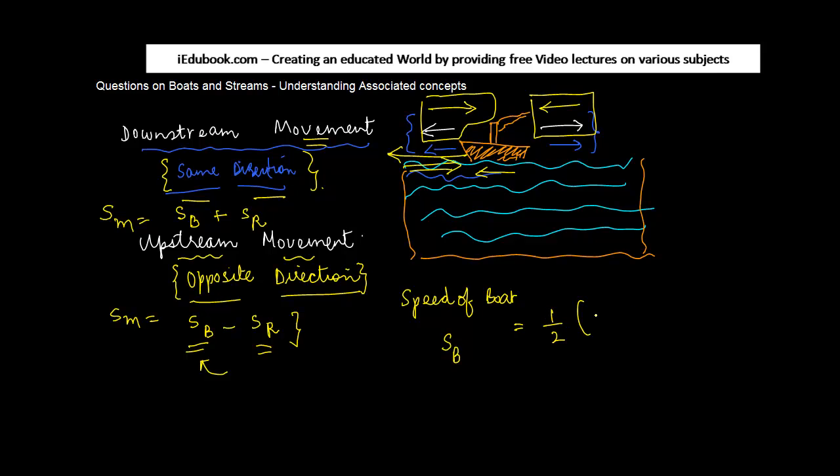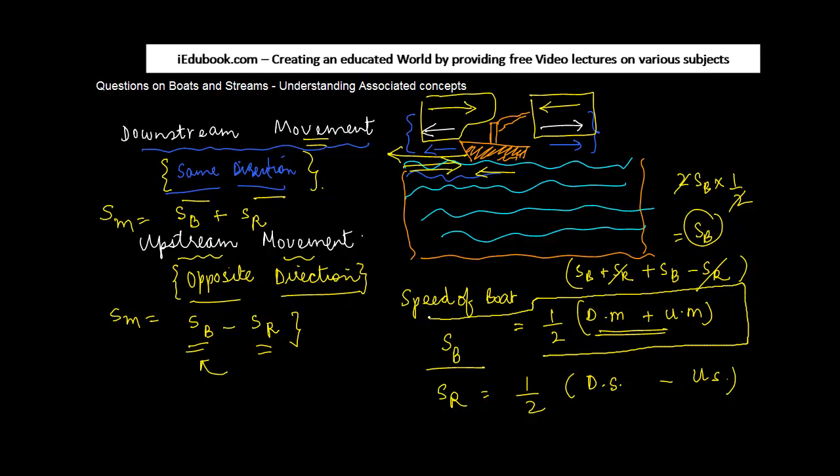Also, you can find out the speed of boat, which I am referring to as SB, as half the sum of downstream movement plus upstream movement. And the speed of river as half the downstream speed minus upstream speed. I've written this as movement, or you can take it as speed also. If you take a sum of these two, the downstream movement is SB plus SR plus SB minus SR. This knocks off, so you get 2SB times one and a half, which is equal to the speed of the boat. That's why we say the speed of the boat is equal to half the downstream speed plus upstream speed. Similarly, speed of the river is equal to half downstream speed minus the upstream speed.